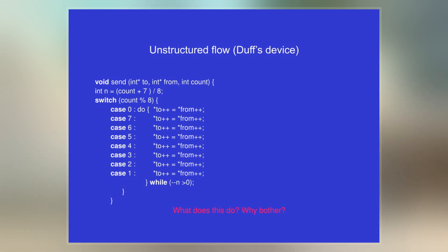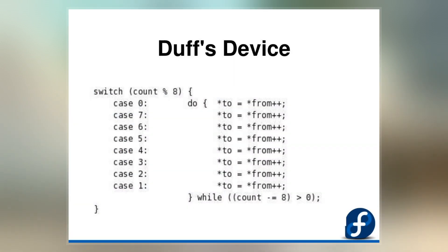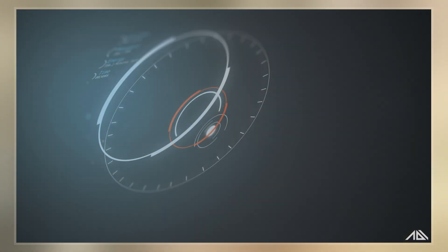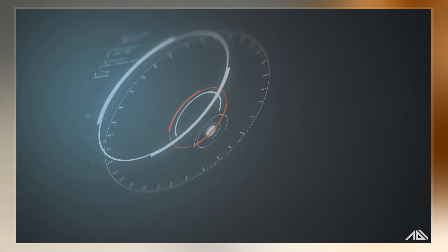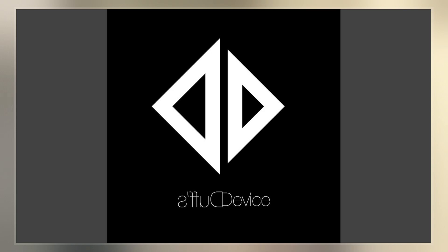Loop unrolling attempts to reduce the overhead of conditional branching needed to check whether a loop is done by executing a batch of loop bodies per iteration. To handle cases where the number of iterations is not divisible by the unrolled loop increments, a common technique among assembly language programmers is to jump directly into the middle of the unrolled loop body to handle the remainder.